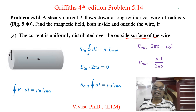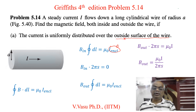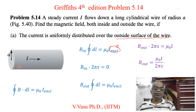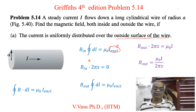However, here the current enclosed is zero, because the current is uniformly distributed over the outside surface of the wire — that is very important. So inside the wire, the enclosed current is zero, meaning the magnetic field inside is zero.